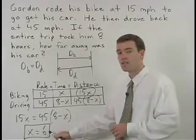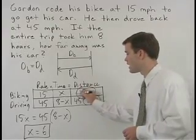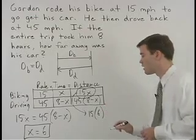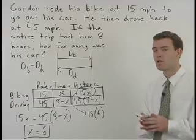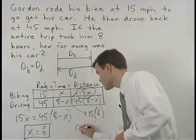Since we know that x equals 6, his distance biking is then 15 times 6 or 90 miles. So we know his car was 90 miles away.